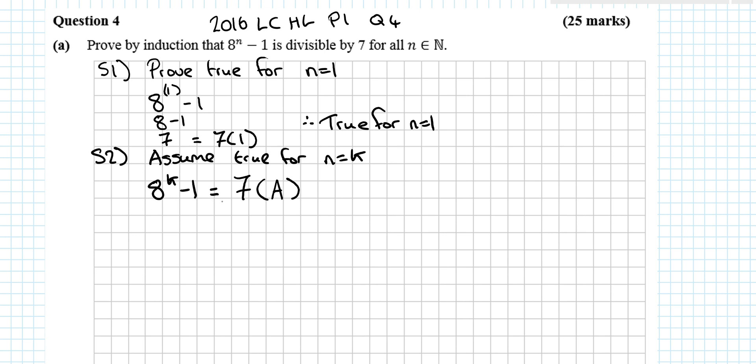And the next part that I say in this step 2 is always isolate the complicated bit. So what's more complicated, 8^k or 7a? I think 8^k is the most complicated bit. So I isolate it, I get it on its own. So I add 1 to both sides.